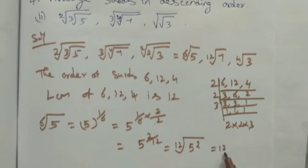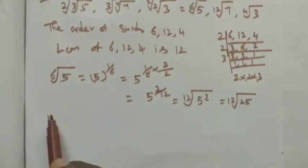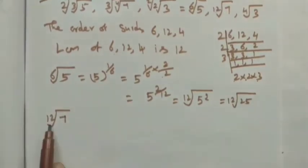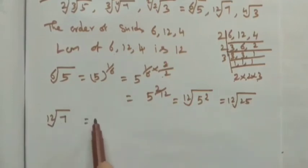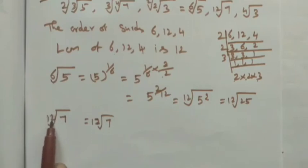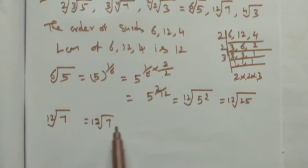The second term is 12th root of 7. Since it is already in the form of 12th root, we take it as it is: 12th root of 7. The order here is 12, so it is already in the 12th order.